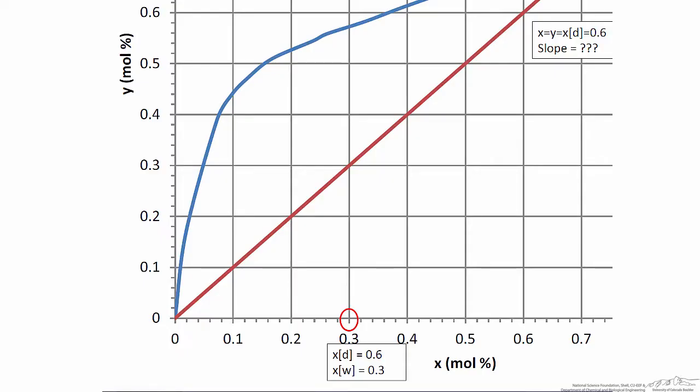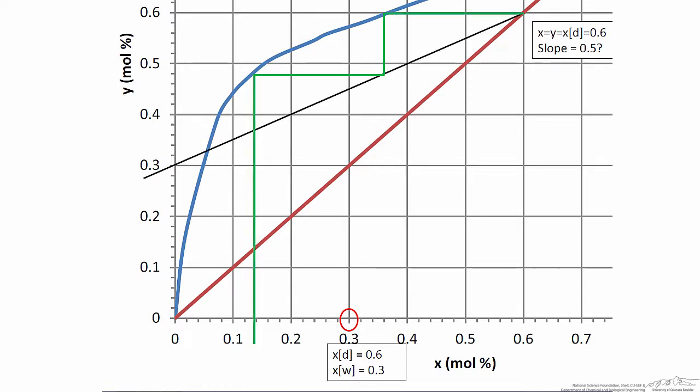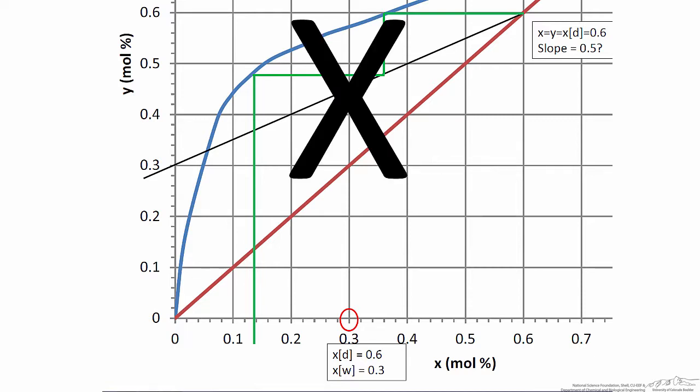Going to a zoomed-in view of the VLE data, we know the operating line passes through x equals y equals 0.6, and we need to satisfy a bottoms composition of 0.3. We take a guess at the slope — starting with 0.5 — and step off the stages to see what bottoms composition results. Drawing that operating line and stepping off the stages shows that a slope of 0.5 does not give us the required bottoms composition of 0.3, so we need to adjust the slope.